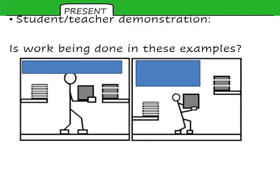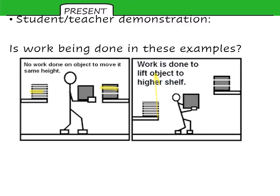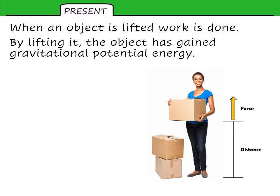Recapping from previously: is work done in these examples? When we carry a book from one shelf to another, is there work done? No — no work is done to move it to the same height because there's no change in energy. But work is done to lift it to a higher shelf, and in terms of the energy gained by the object, that is a gain of the gravitational potential store. So by lifting an object, work is done. There is a force equal to the weight of the object and a distance equal to the height, so there is a gain of gravitational potential energy.